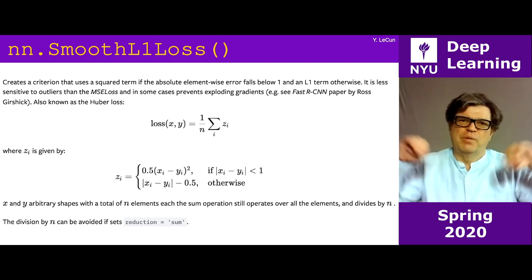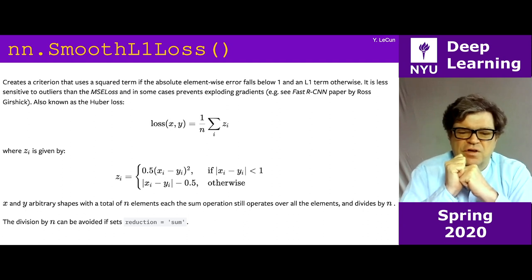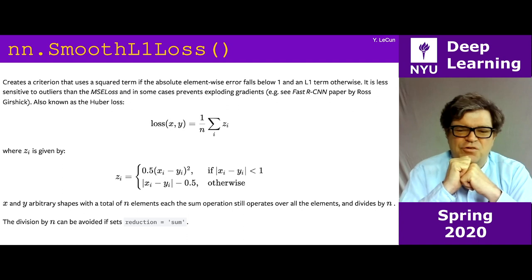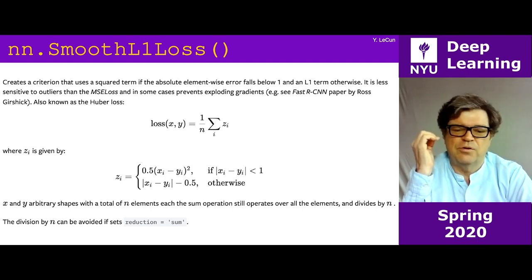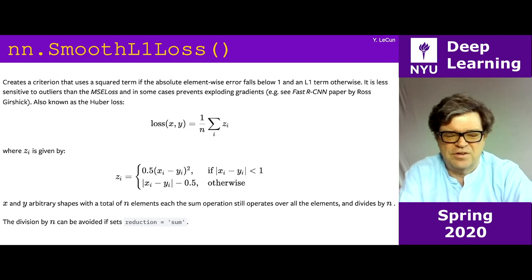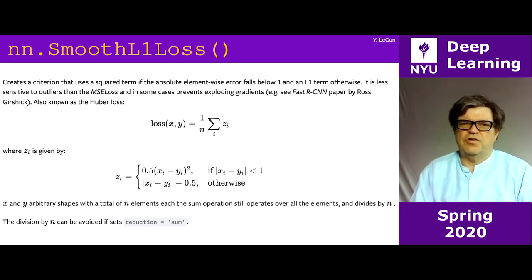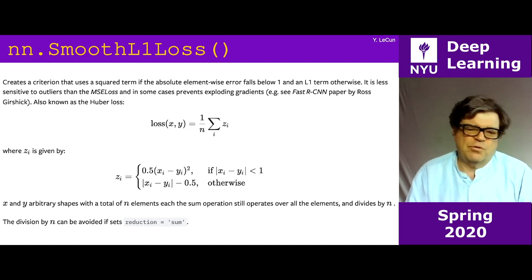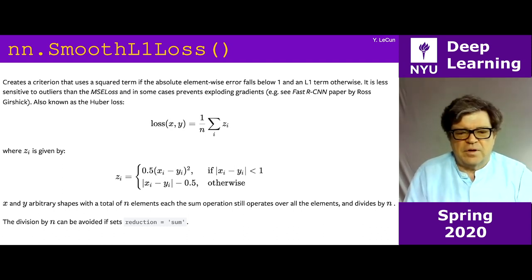To get robustness for large errors but smoothness near zero like squared error, people use smooth L1 loss: it behaves like L1 far from zero and like L2 nearby. This is sometimes called Huber loss or elastic network loss, from an old paper from the 1980s-90s. It was popularized by Ross Girshick in the Fast R-CNN paper and is widely used in computer vision to protect against outliers.